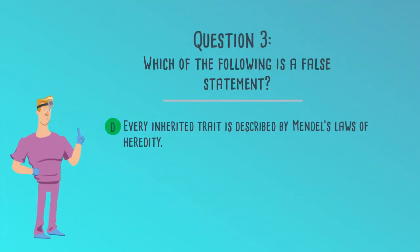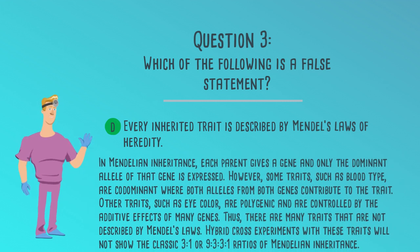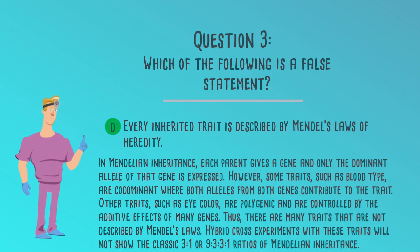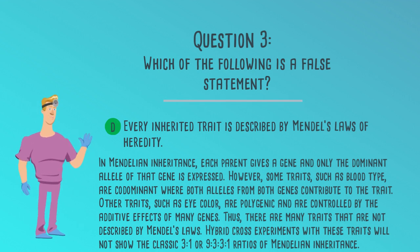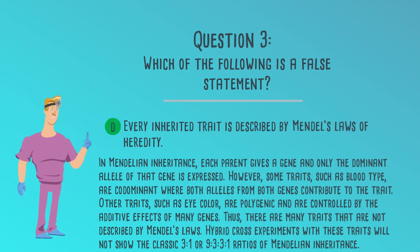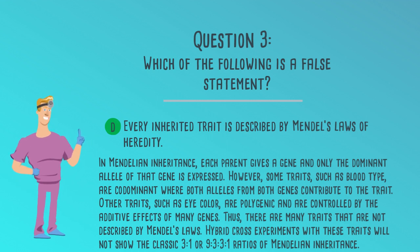The correct answer is D. Every inherited trait is described by Mendel's laws of heredity. In Mendelian inheritance, each parent gives a gene and only the dominant allele of that gene is expressed. However, some traits, such as blood type, are co-dominant where both alleles from both genes contribute to the trait. Other traits, such as eye color, are polygenic and are controlled by the additive effects of many genes. Thus, there are many traits that are not described by Mendel's laws. Hybrid cross-experiments with these traits will not show the classic 3:1 or 9:3:3:1 ratios of Mendelian inheritance. Did the word 'false' in this question throw you off? Be careful to notice words like this in the questions.